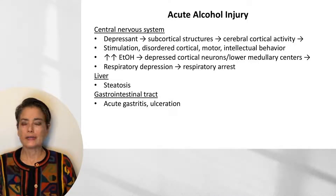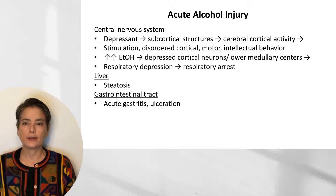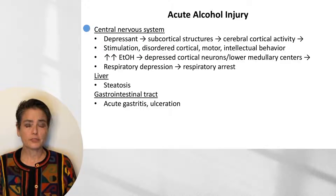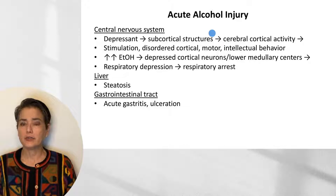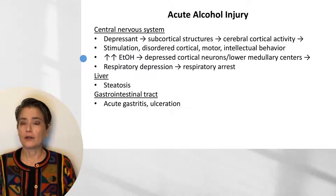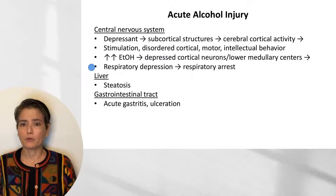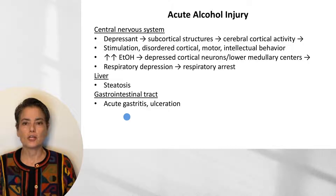When thinking about alcohol injury, it is useful to distinguish acute from chronic alcohol injury. For acute alcohol injury, three systems are important. First, the central nervous system: alcohol acts as a depressant on subcortical structures, modulating cerebral cortical activity and leading to stimulation and disordered cortical, motor, and intellectual behavior. With increasing consumption, we can get depressed cortical neurons and lower medullary centers including the respiratory center, leading to respiratory depression and arrest. In the liver we see steatosis, and in the stomach, acute alcohol can cause gastritis and ulceration.